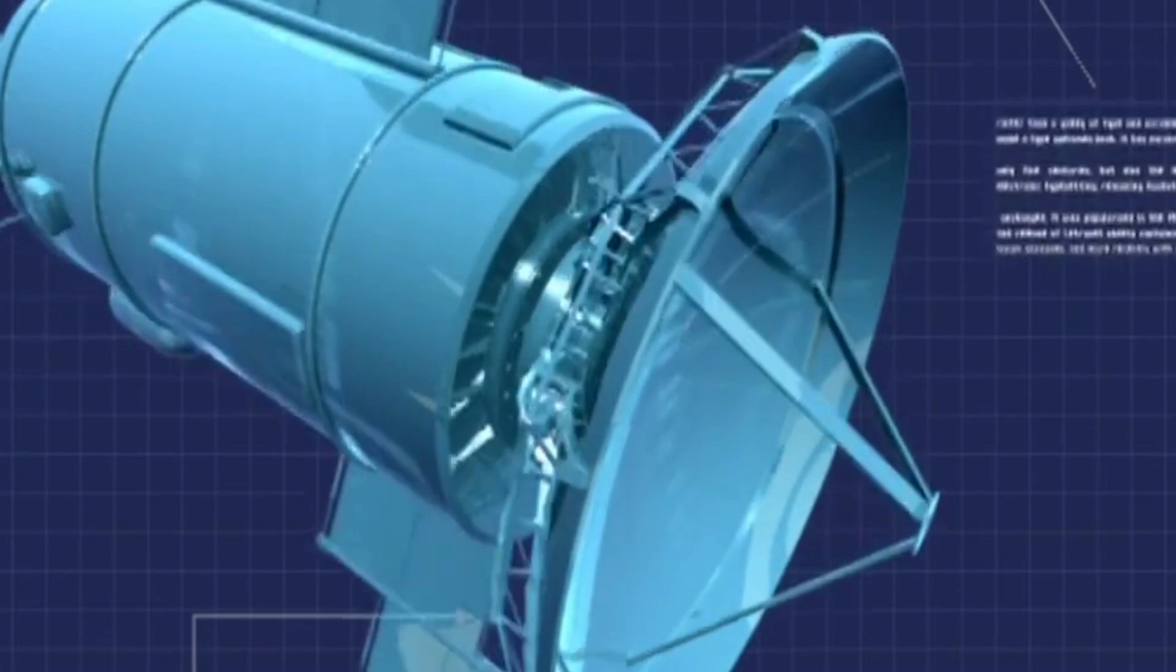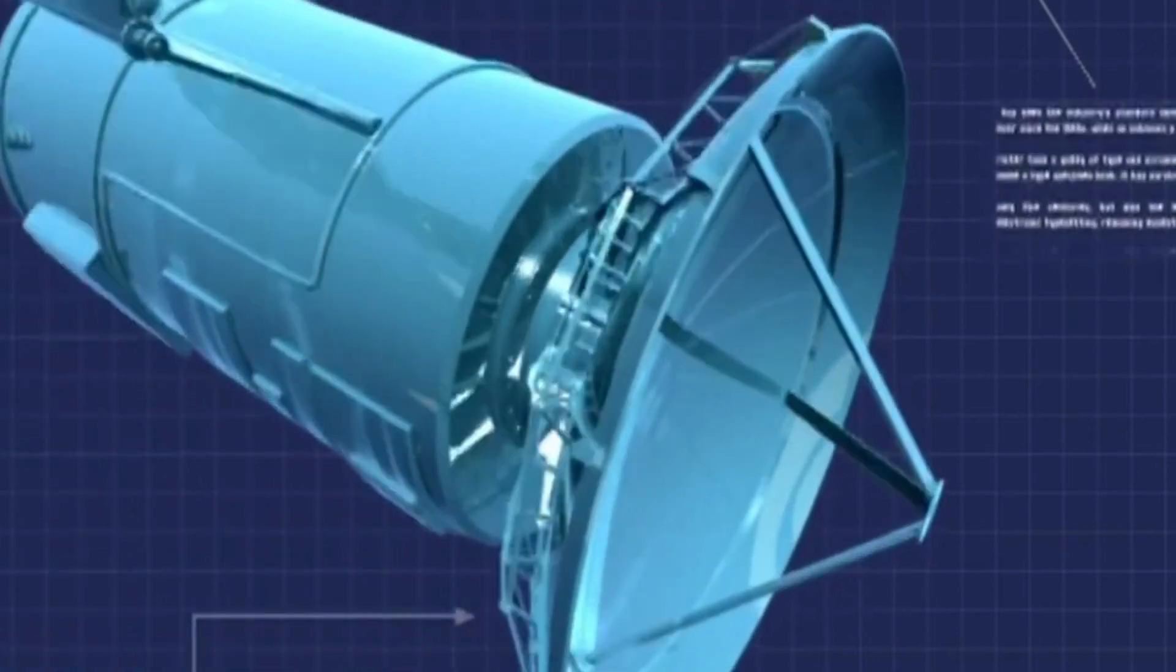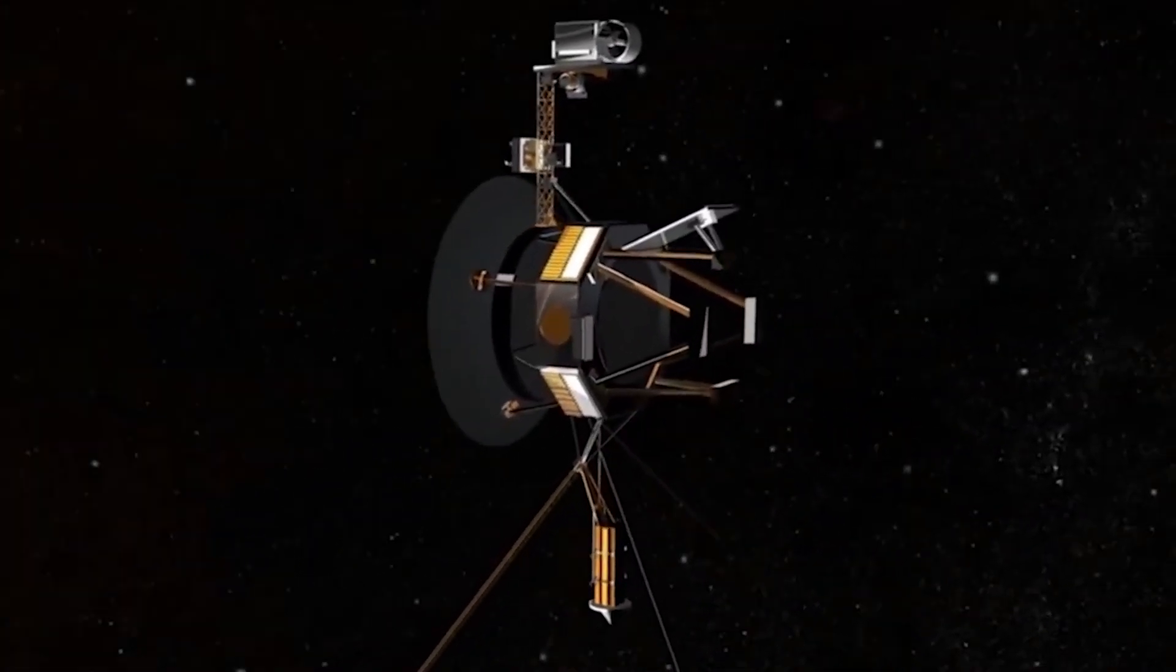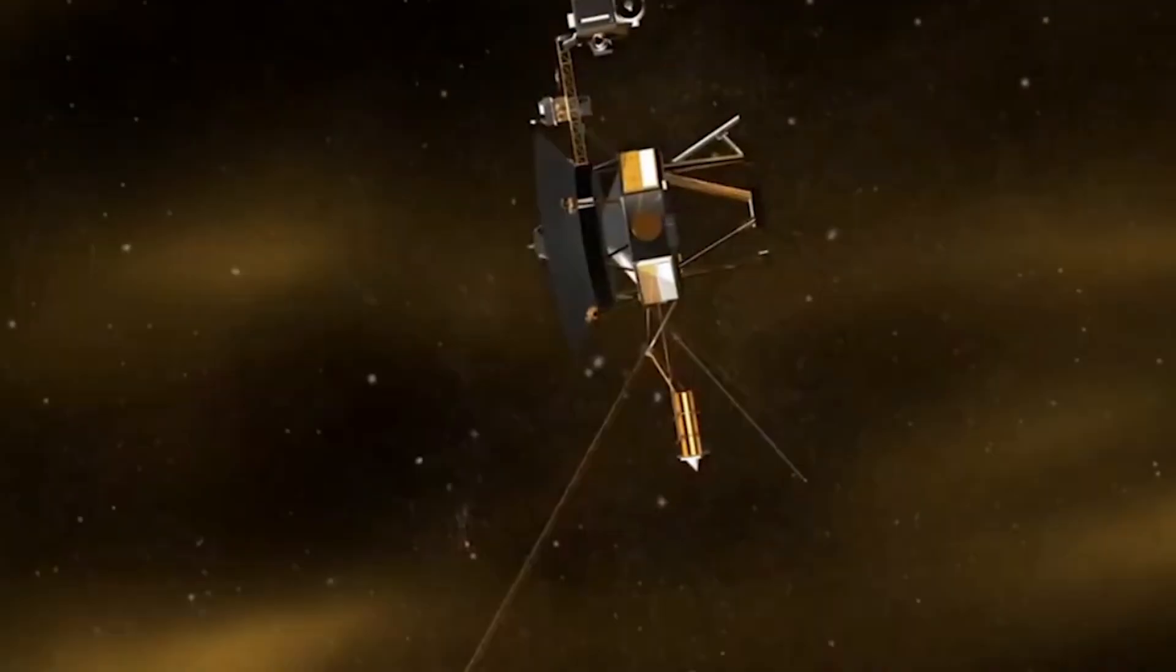NASA had no doubt that the spacecraft were well-equipped to survive whatever awaits them in the interstellar world. So they set Voyager 1 on its path at a speed of 38,000 miles per hour.